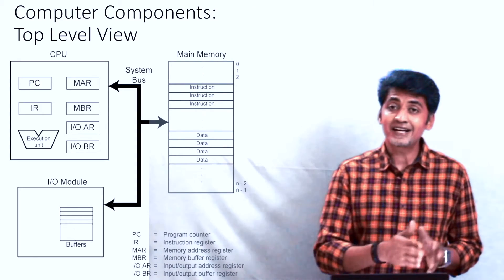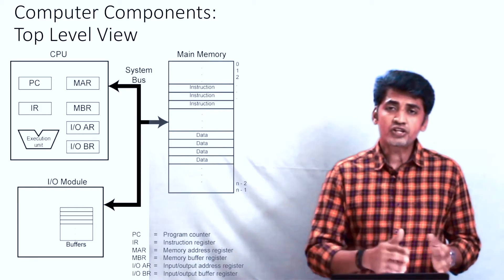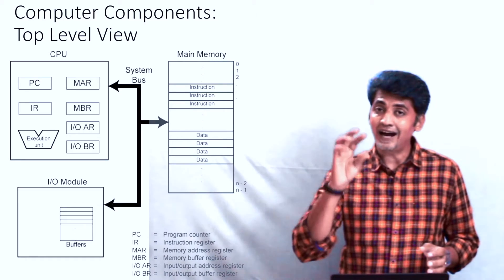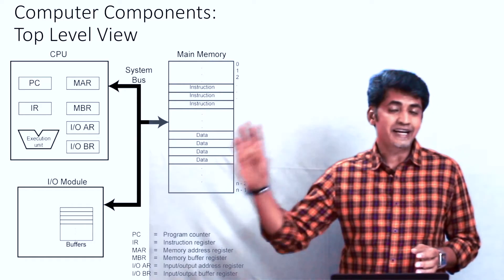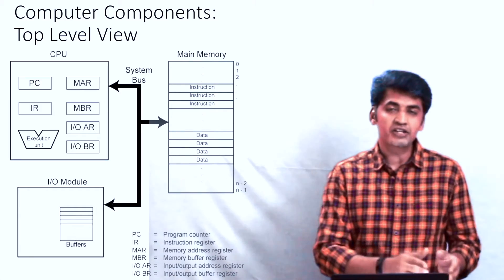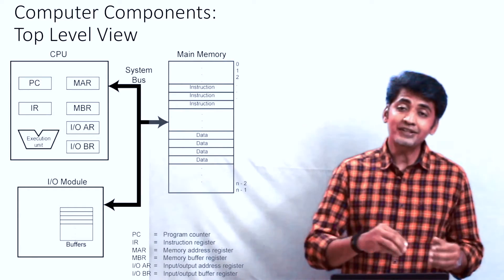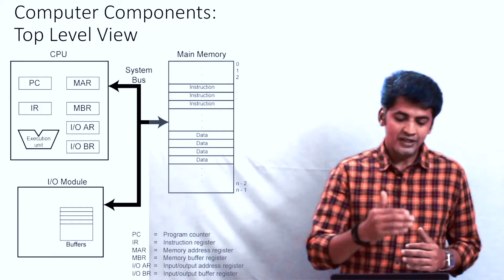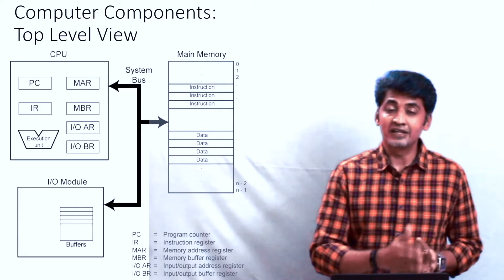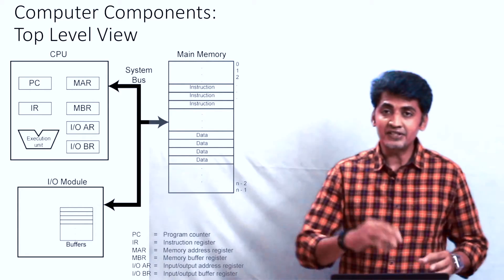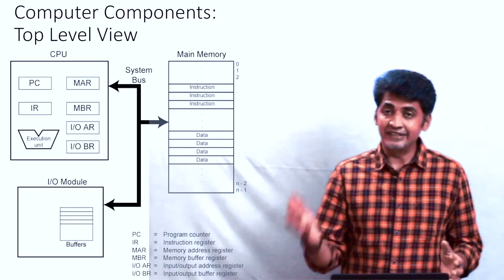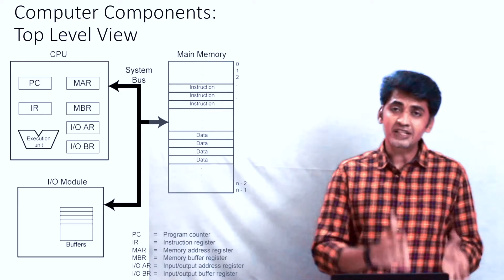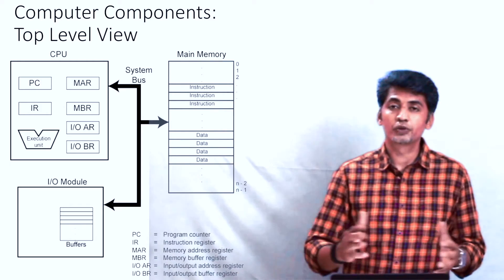One more component is the IR, the instruction register. The instruction register is used to fetch the instruction. After getting the address from the memory location, the instruction is taken and fetched into the instruction register. After the instruction fetch, the memory address register and memory buffer register are used for data collection. Finally, you can see the execution unit.